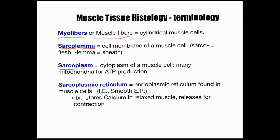Much like a regular cell has cytoplasm, muscle cells have what's called a sarcoplasm, which is basically the fluid within the cell. It contains many mitochondria — remember from regular biology, mitochondria convert glucose, a simple sugar, into ATP energy. ATP is what can be used as an immediate source of energy, and it's ATP which allows your muscles to contract to allow movement.